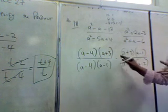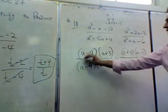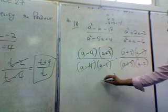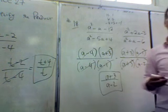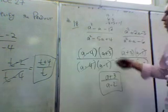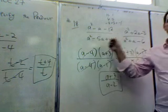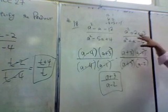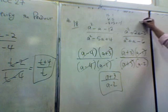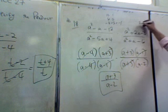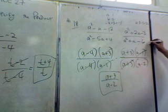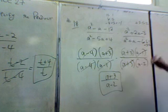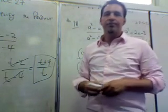Once everything is factored, the cancellations are obvious: (a - 4) cancels with (a - 4), (a + 3) cancels with (a + 3), (a - 1) cancels with (a - 1), and we're left with (a + 3) over (a - 2) as the final answer. If you're having trouble, go back to Chapter 6 and practice factoring — most of this problem was just factoring. Write out the factors if needed; for example, factors of 6 are 6 and 1, or 3 and 2, and 3 minus 2 equals 1. The more you practice, the better you get.